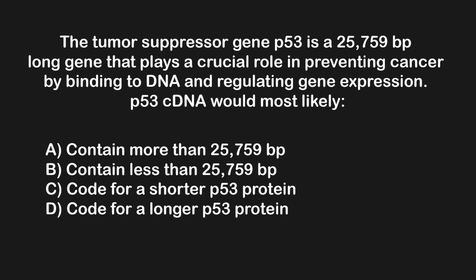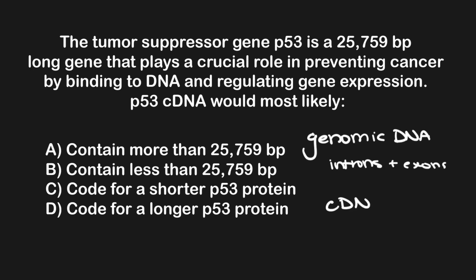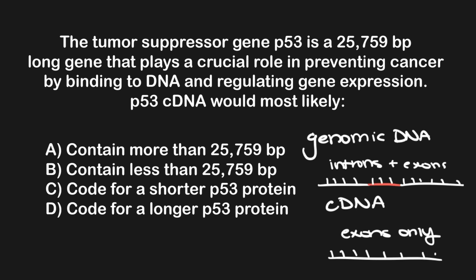Genomic DNA and cDNA differ from one another in size. Because genomic DNA contains introns, it will be longer than cDNA, which lacks introns, because it was generated from an mRNA that already had those introns spliced out — meaning it would be shorter. In this case, the correct answer must be B, since we would expect the cDNA to be smaller, containing fewer base pairs than the original due to its lack of introns.